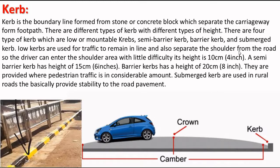Low curbs are used for traffic to remain in lane and also separate the shoulder from the road, so the driver can enter the shoulder area with little difficulty. Their height is 10 centimeters. Semi-barrier curbs have a height of 15 centimeters (6 inches). Barrier curbs have a height of 20 centimeters and are provided where pedestrian traffic is in considerable amount. Submerged curbs are used in rural roads and basically provide stability to the road's pavement.